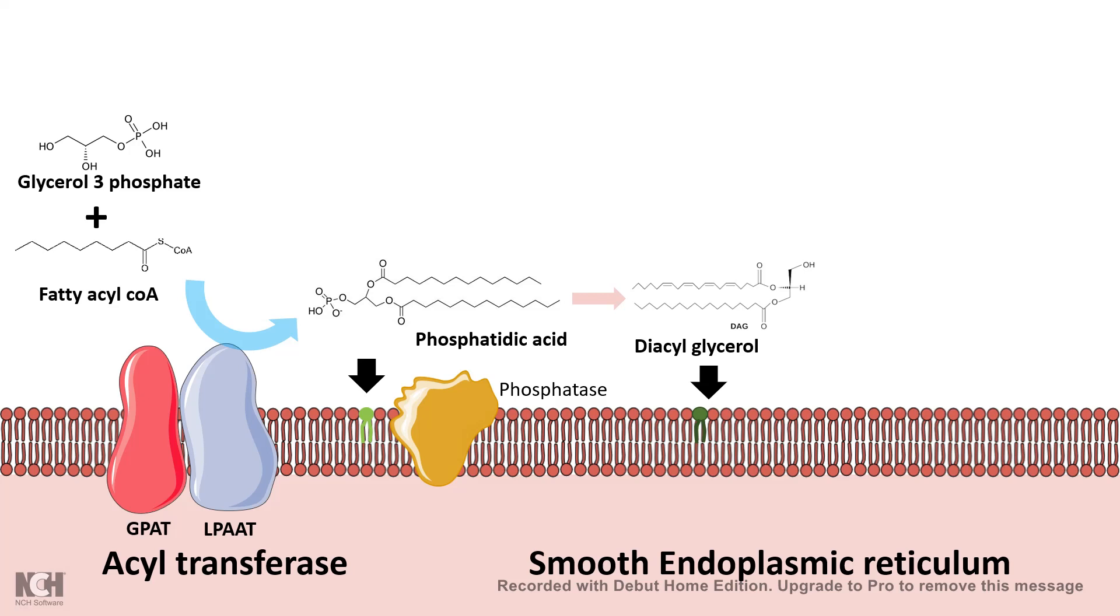For example, a choline phosphotransferase would attach a choline group to the diacylglycerol and it would form phosphatidylcholine, which is a key phospholipid present in the outer leaflet of the membrane.